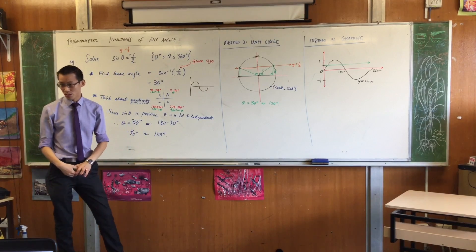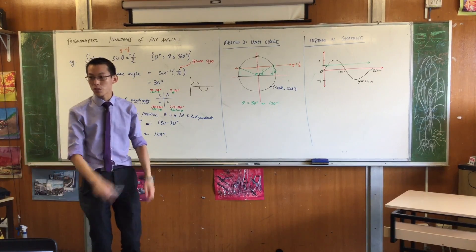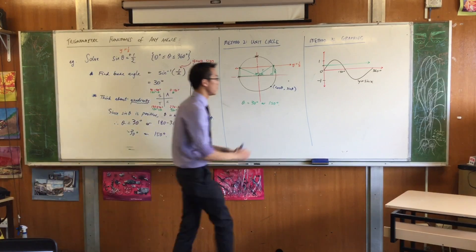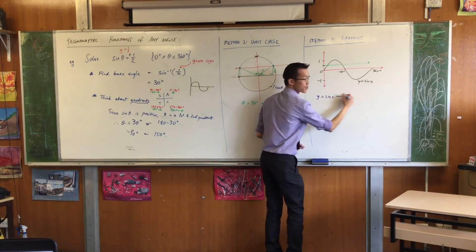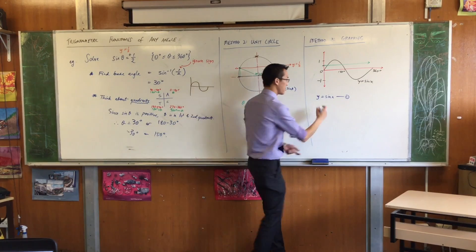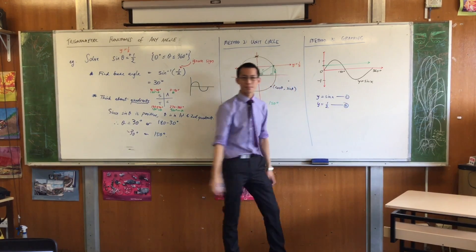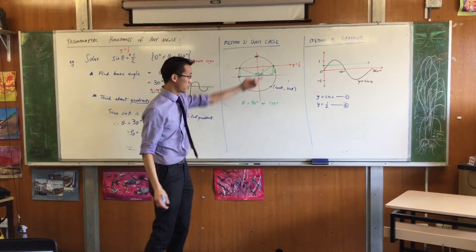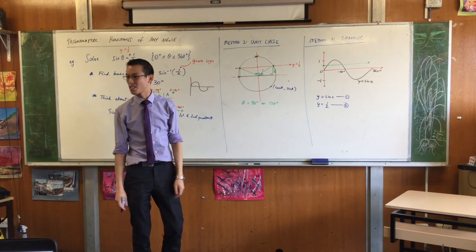Now, just like with the unit circle, essentially what you are doing now is solving simultaneous equations. I have given you this equation, let's call that equation 1, and then I've given you this equation, and I'm going to call it equation 2. I've just drawn them. y equals a half is the green line, and y equals sine x is the black line.